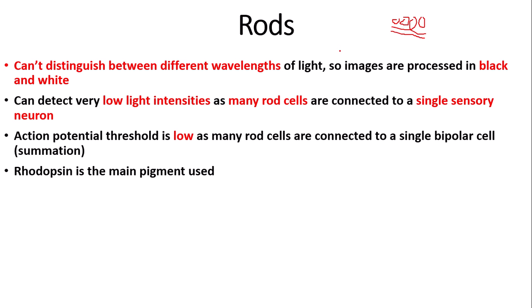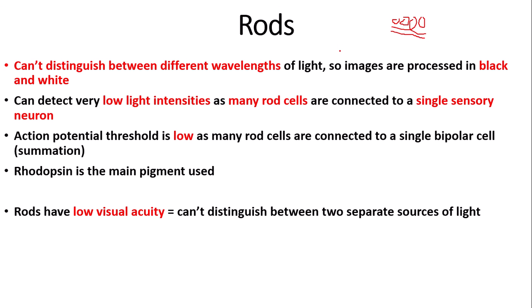In rods, rhodopsin is the main pigment used. This pigment has to be broken down in order for an action potential or electrical impulse to be transferred to the bipolar cells and ganglion cells, then the optic nerve. Also, rods have what we call a low visual acuity, meaning that rods can't distinguish between two separate sources of light. So if shown an image of two circles, the rods can't detect them as separate — they might look like just one circle.